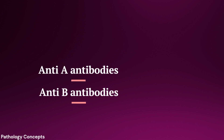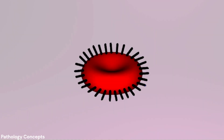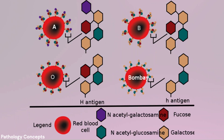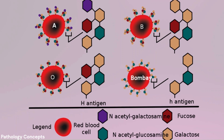Among the 33 systems, the ABO system remains the most important in transfusion and transplantation, since any person above the age of six months possesses clinically significant anti-A and/or anti-B antibodies in their serum. The biosynthesis of H, A, and B antigens involves a series of enzymes called glycosyl transferases that transfer monosaccharides.